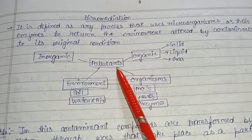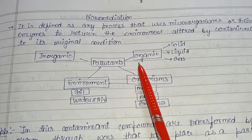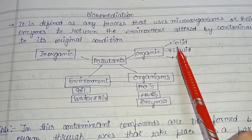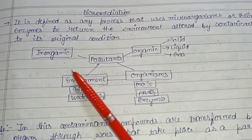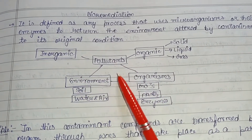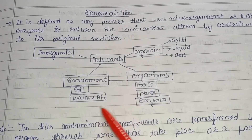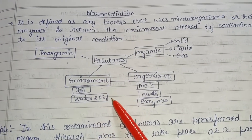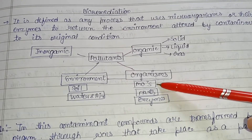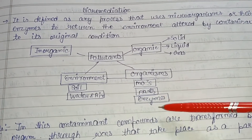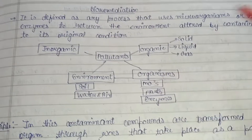Pollutants are of various types. In the case of organic pollutants, they can be in the form of solid, liquid, and gas. There are also inorganic pollutants present in the environment — in soil, water, and air — which create pollution. In terms of organisms, microorganisms, plants, and enzymes are all interconnected in the bioremediation process.